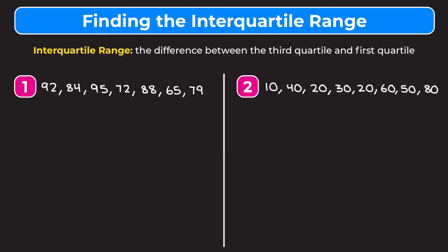Let's jump into example one. We've got seven numbers, and we want to start by lining them up from least to greatest so we can find the median and then the quartiles. I'm going to write the smallest number first, crossing them out as I go: 65, 72, 79, 84, 88, 92, and 95.